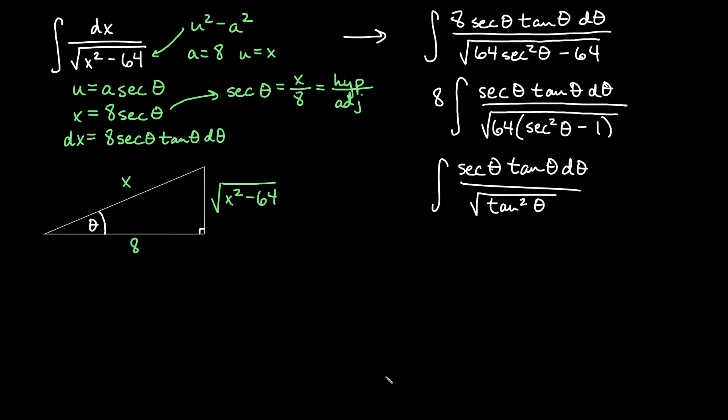And now because we are in a right triangle, we don't have to worry about any sort of negatives under there. So the root and the square will just reduce.